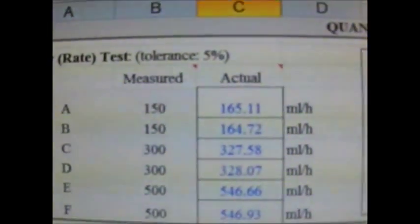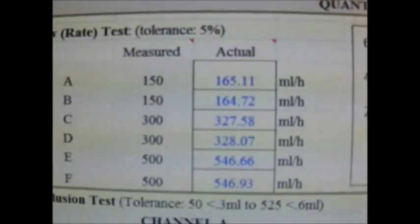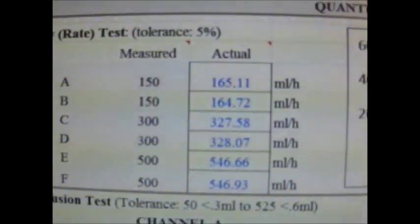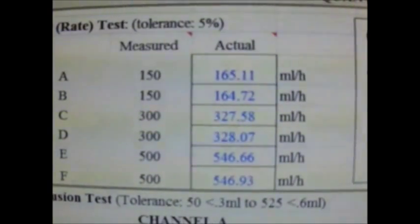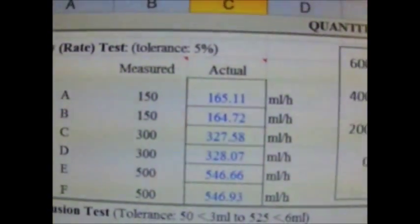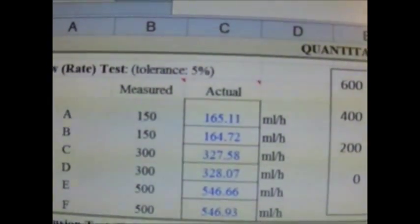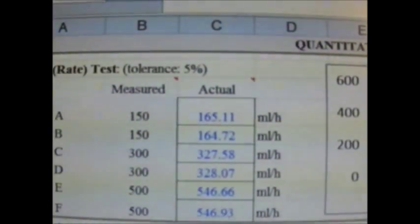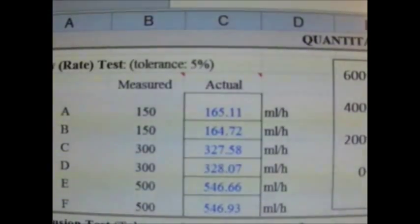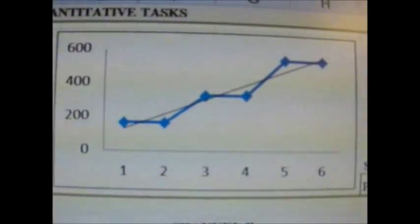Let's begin with the quantitative testing. The first test is the flow or rate test, which we will measure at a low, a medium, and a high rate. Basically, flow is the rate or speed at which IV fluid flows within a given amount of time. As you can see, we measure this in milliliters per hour, which is graphed here on a chart.